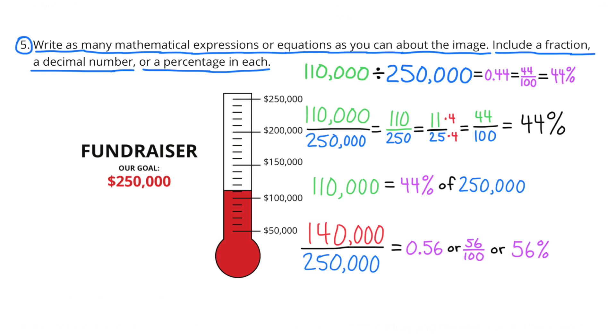110,000 divided by 250,000 is the same as 110 divided by 250. It's also the same as 11 divided by 25. And 11 divided by 25 or 11 25ths is the same as 44 hundredths. And 44 hundredths is also 44%. 110,000 equals 44% of 250,000.